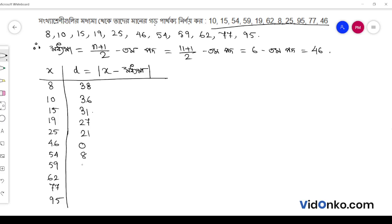Continuing: 46 minus 0, 54 minus 8, 59 minus 13, 62 minus 16, 77 minus 31, 95 minus 49.